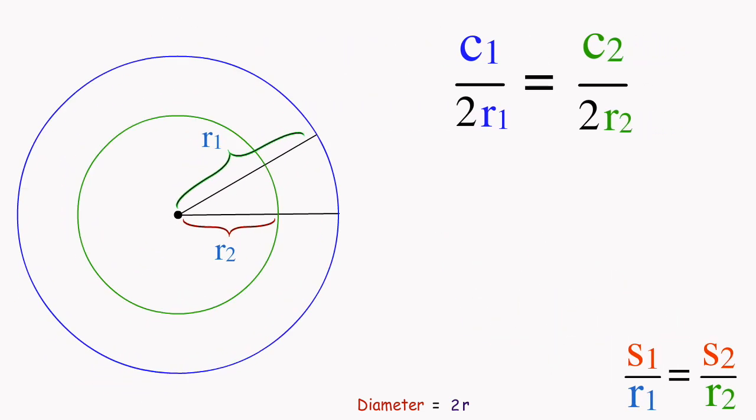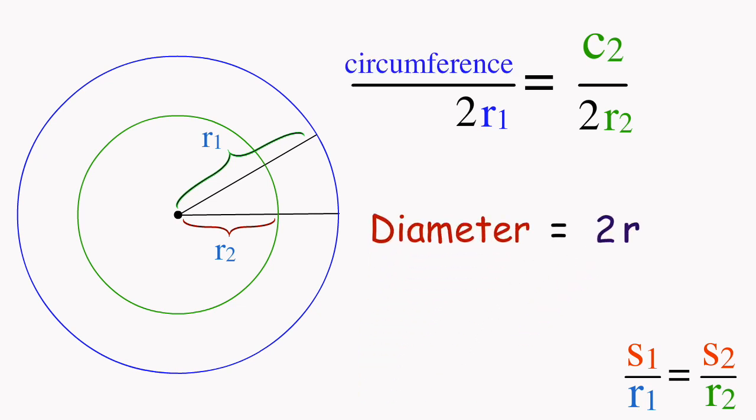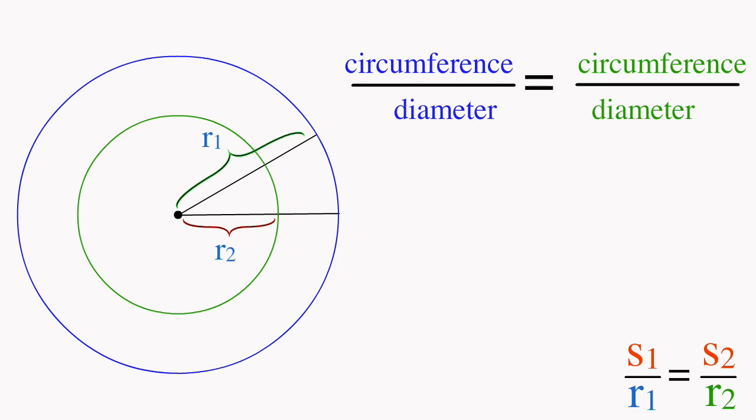In other words, the ratio of the circumferences over the diameters of both circles are equal, and this ratio is what we call pi. Since in the beginning of this proof we are allowed to use any two circles, we can expand this further by saying that pi exists as the ratio of any circle.